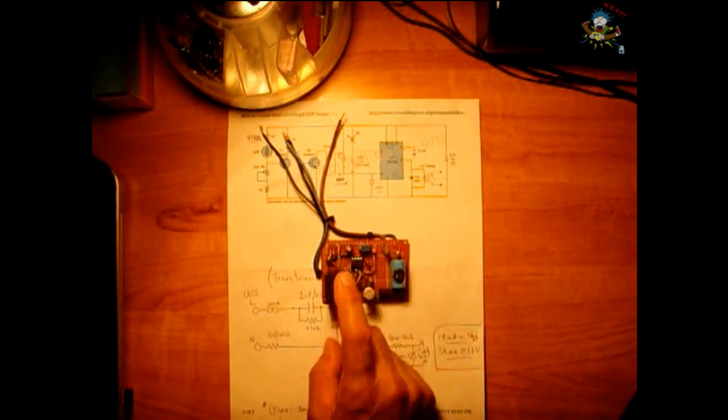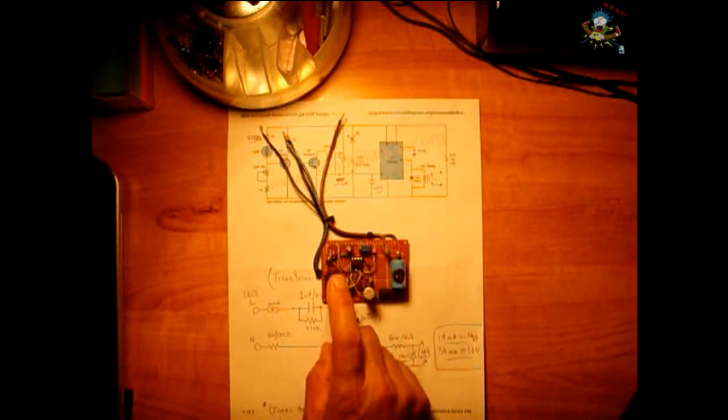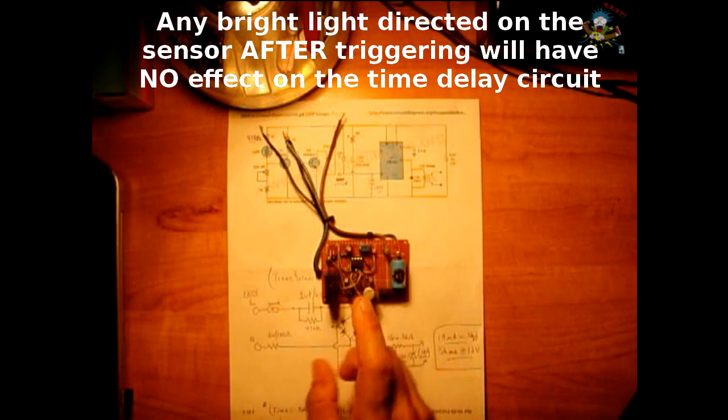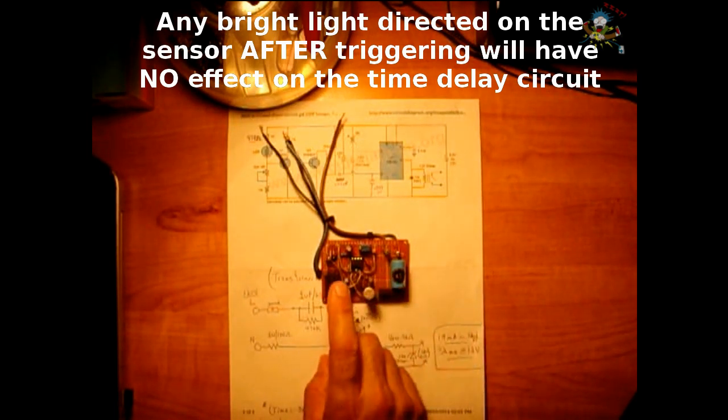Now as long as a bright light is not shined on the LDR or the phototransistor after the circuit is triggered, it will remain off the whole night. A little bit of lightning will not bother it.